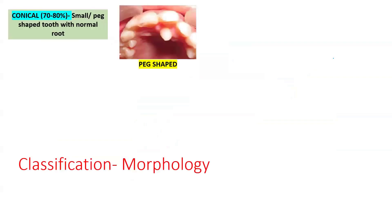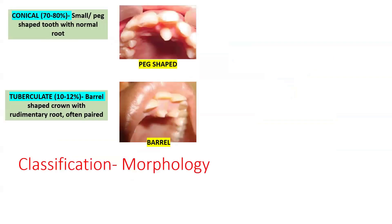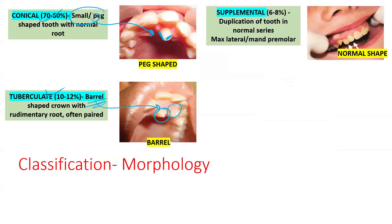Based on morphology: conical is the most common, presenting as a small peg-shaped tooth tapering towards the incisal edge. Tuberculate is barrel-shaped, rudimentary, and often present in pairs. Supplemental tooth resembles the adjacent tooth in the arch — most commonly the maxillary lateral incisor or the mandibular premolar.